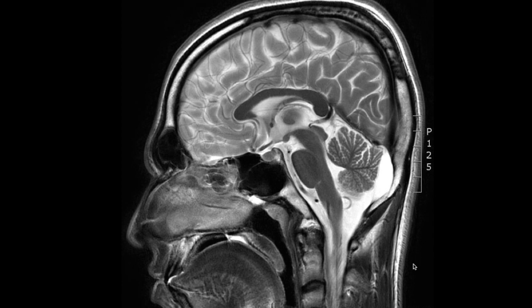The vermis is divided into three parts by a primary fissure and a pre-pyramidal fissure, giving three different divisions. The first consists of three lobules: the lingula, central lobule, and the culmen. The next division contains the declive, folium, and tuber. Finally, the third contains the pyramid, uvula, and nodule — of which the middle part of these lobules is the smallest.